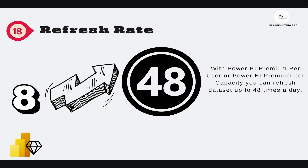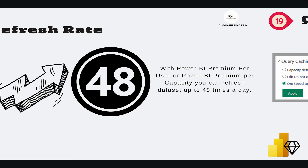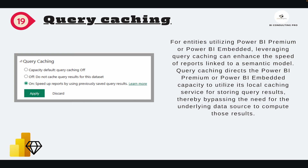Regarding Refresh Rate: with Power BI Pro you can refresh your dataset up to eight times a day. With Power BI Premium you can refresh up to 48 times a day — that's every 30 minutes. Additionally, there is no limit when refreshing through the REST API, so you can refresh any number of times. I have also created videos and shorts on improving Power BI performance — please check them out on our channel.